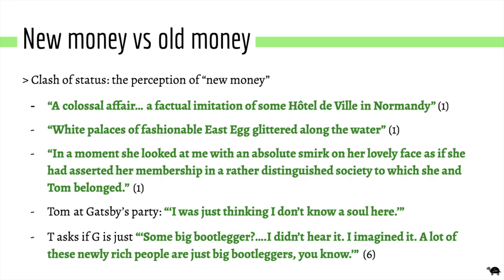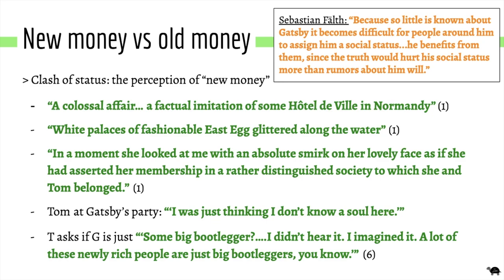Here are some quotes on the clash between new money and old money. Tom particularly embodies this clash — he says 'a lot of these newly rich people are just big bootleggers.' Tom doesn't even have to know Gatsby to know his wealth is from illegal sources. Another interesting critic discussed how at the beginning of the novel Gatsby is an enigma — you hear rumours because no one really knows who he is. Because so little is known about Gatsby, it becomes difficult for people to assign him a social status, and as a result Gatsby benefits from the gossip because it hides the truth of where he got his money.